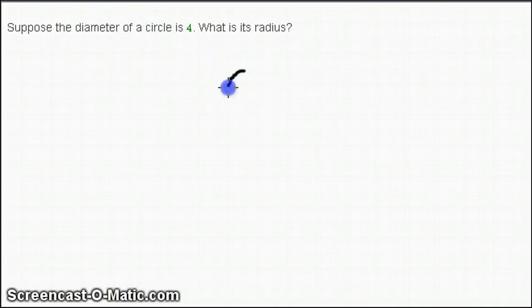If you didn't know, if you have a circle like this, what a radius is, is half the circle, and what the diameter is, is the full circle.